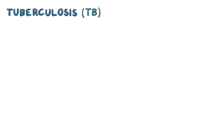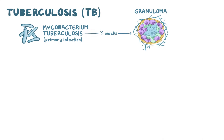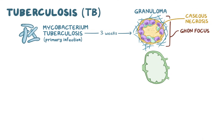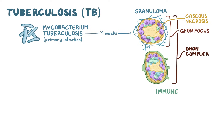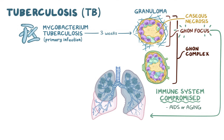As a quick recap: tuberculosis, or TB, is an infection caused by mycobacterium tuberculosis that mainly affects the lungs. Three weeks after the primary infection, the immune system tries to contain the infection by creating a granuloma, and the tissue in the middle undergoes caseous necrosis, resulting in an area called a Ghon focus. TB also extends to nearby hilar lymph nodes, causing caseous necrosis there as well. The Ghon focus plus the affected lymph node makes up the characteristic Ghon complex. If the immune system becomes compromised, like with AIDS or older age, the Ghon focus can reactivate, and the infection can spread to one or both upper lobes of the lungs, where it forms cavities.